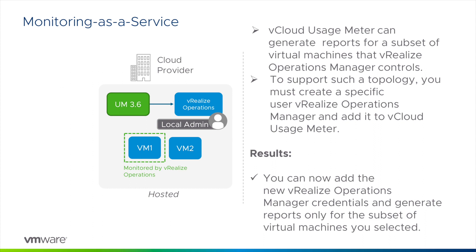As an example, virtual machine 1 belongs to a tenant that uses the service, and virtual machine 2 belongs to a tenant that does not. Our newly created local administrator has permissions to view virtual machine 1, but not virtual machine 2. Once you've completed mapping the users for all objects monitored by any of your tenants or administrators, we then take that user and provide the credentials to vCloud Usage Meter for the vRealize Operations endpoint. Usage Meter will only see the objects that are actively part of this service. Just make sure to update the mapping and user view permissions when you onboard a new tenant.